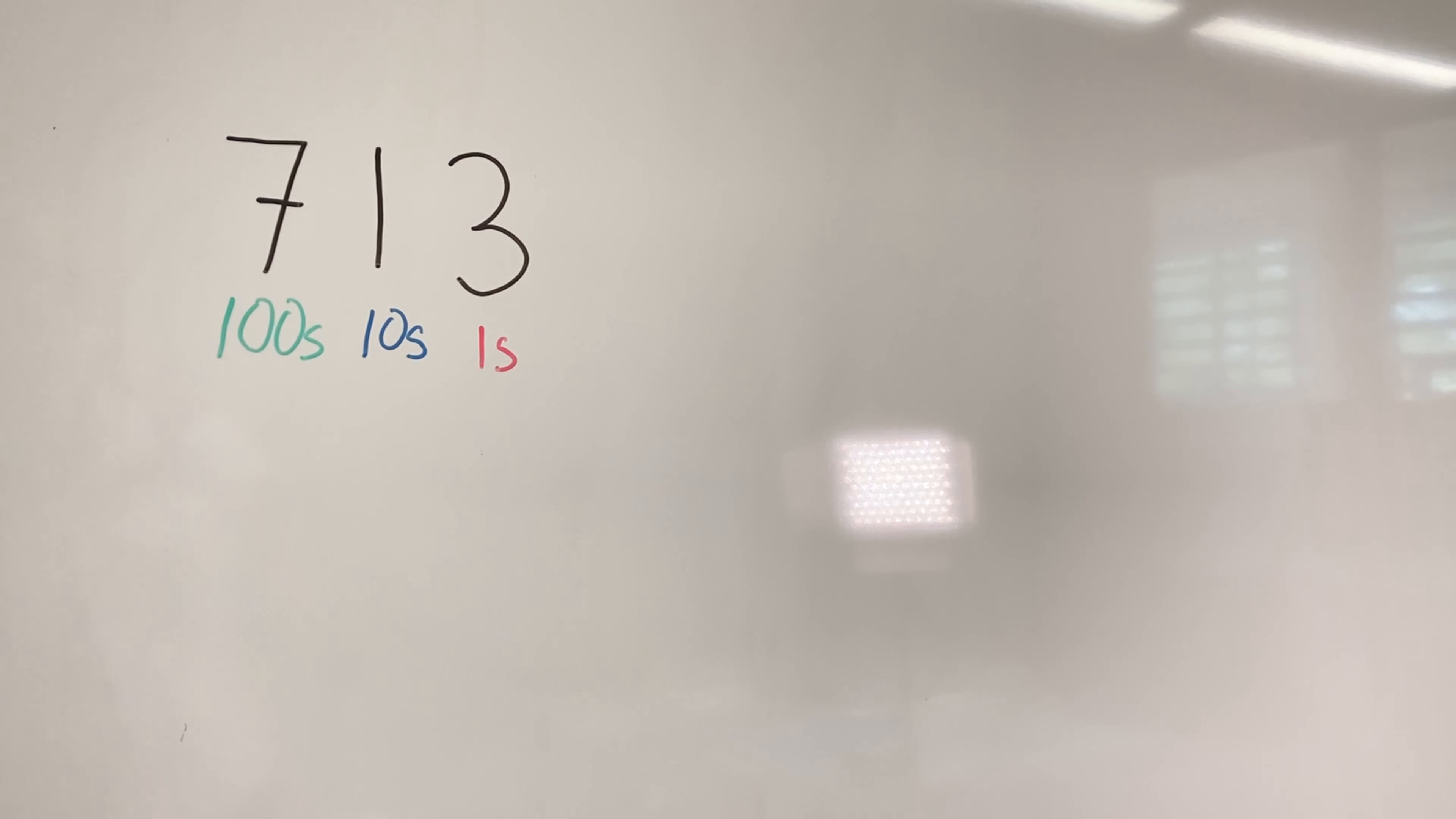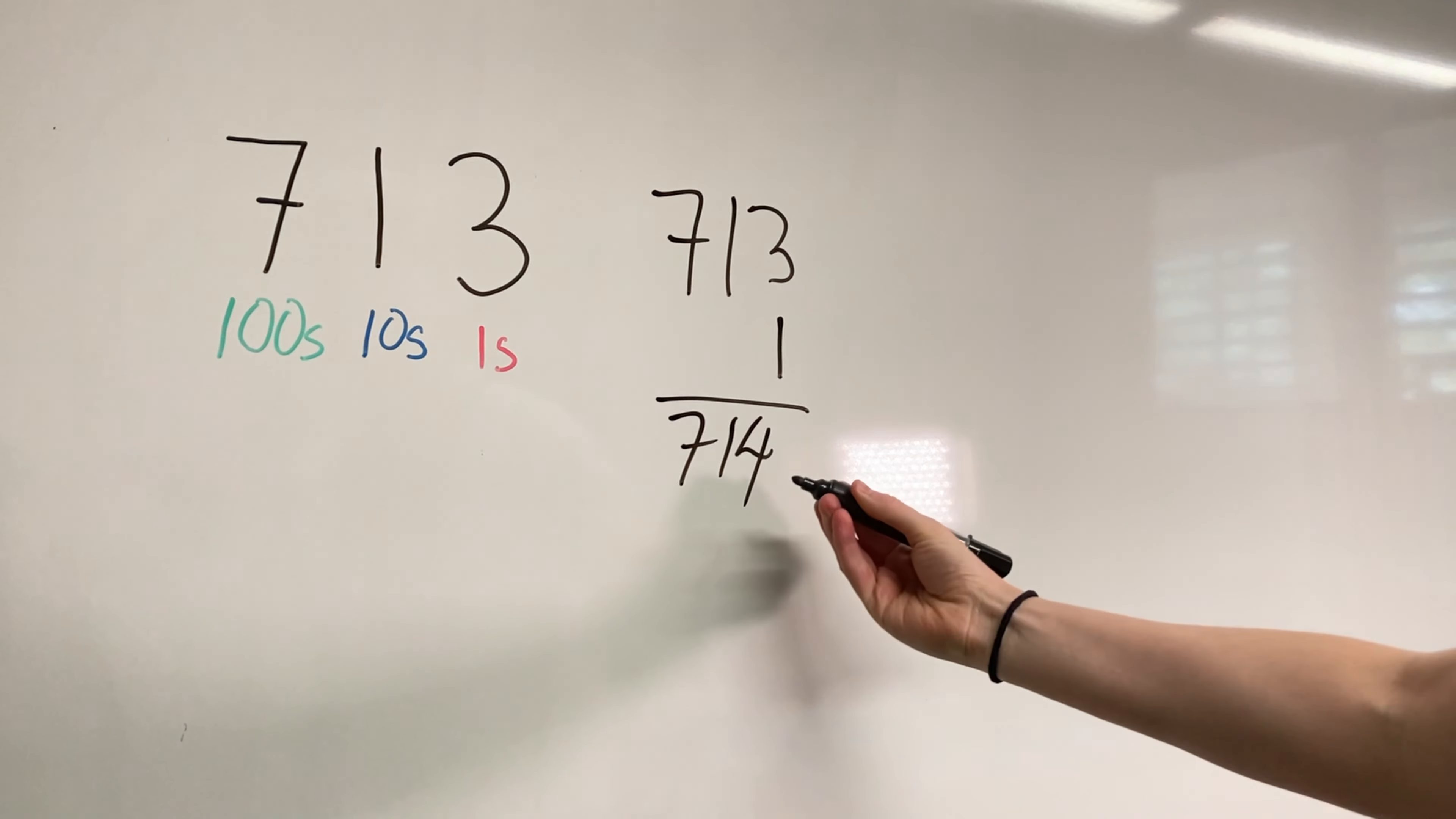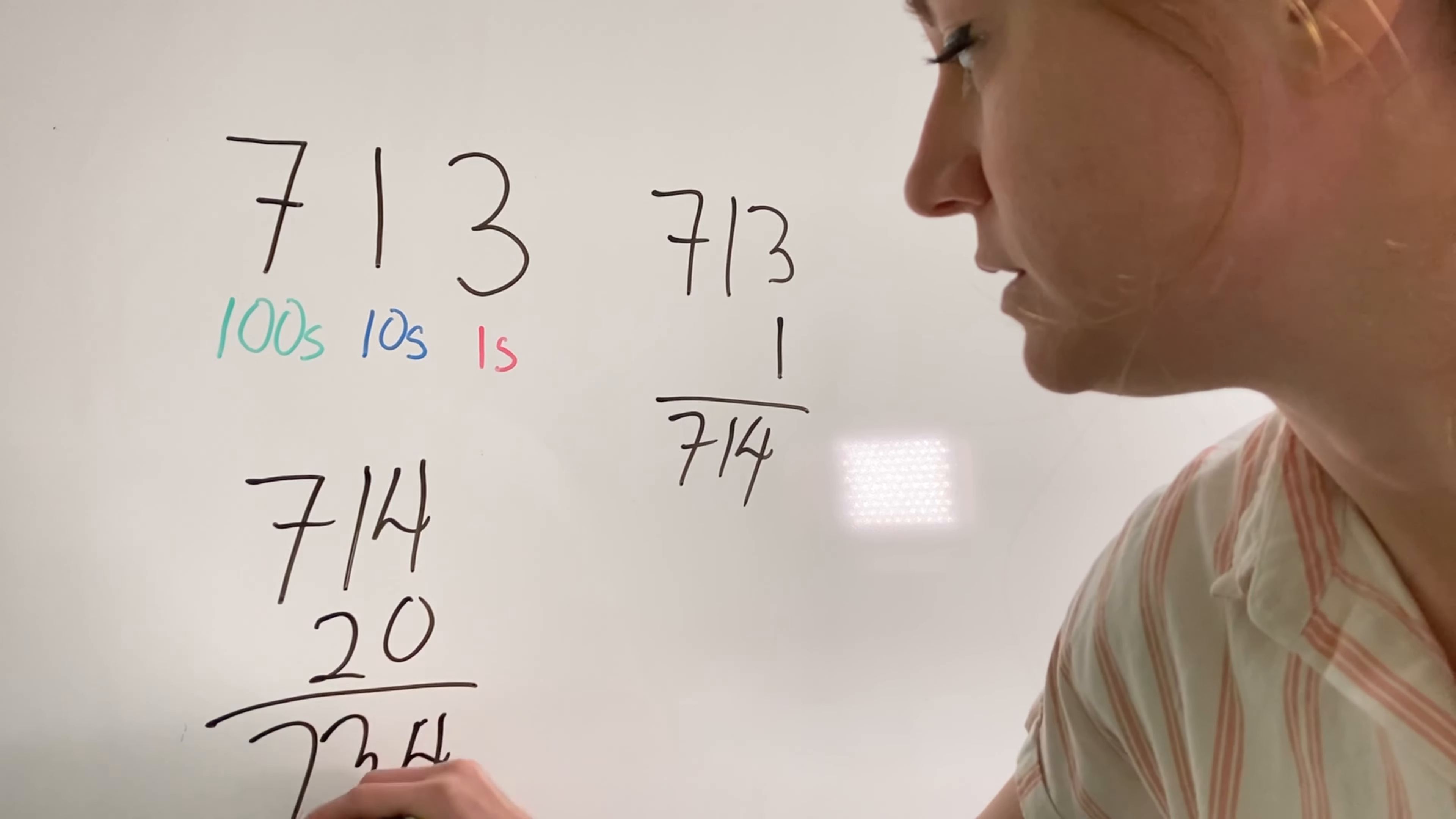So if you've got the number 713, you know that there are three ones, one ten, and seven hundreds in it. And if you want to start adding to this number, you add things in the right place value. So if you want to take 713 and add one to it, you're going to put that in the ones column, which is going to give you 714. But let's say you want to add 20 to this instead. You're going to take 714 and you're going to put two in the tens column. That's going to give you 734.